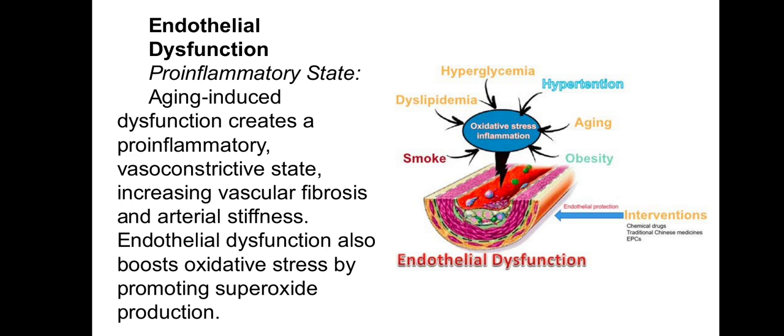Pro-inflammatory state: age-related endothelial cell dysfunction creates a pro-inflammatory vasoconstrictive state, increasing vascular fibrosis and arterial stiffness. Endothelial dysfunction also boosts oxidative stress by promoting superoxide production. The factors creating oxidative stress include hyperglycemia — high blood sugar — aging, obesity, smoking, high concentration of free fatty acids, and hypertension. Hypertension is related to stiffening of the arteries and creates oxidative stress, leading to endothelial dysfunction.